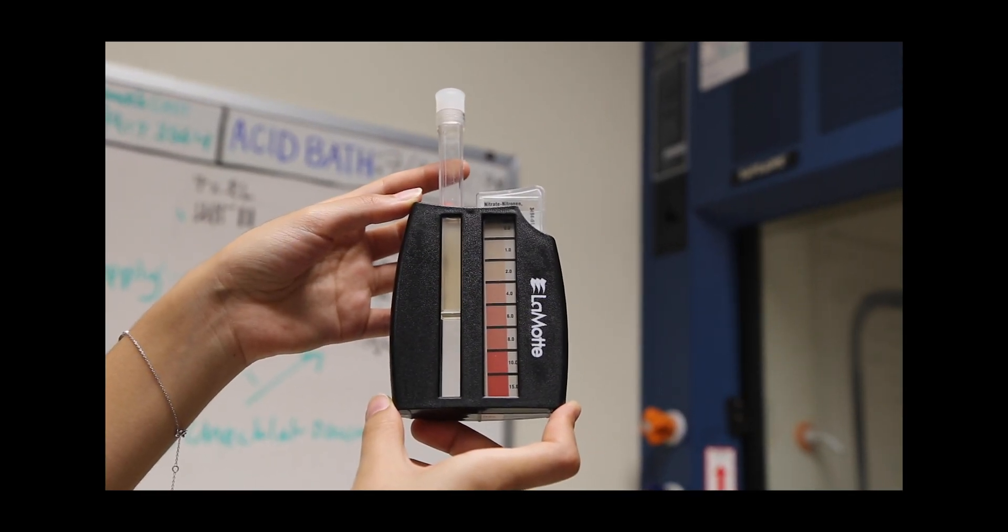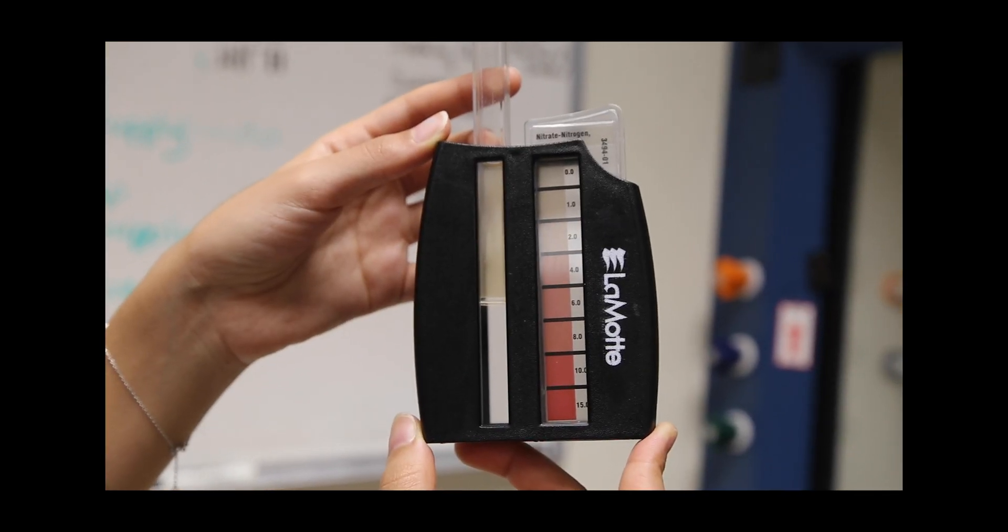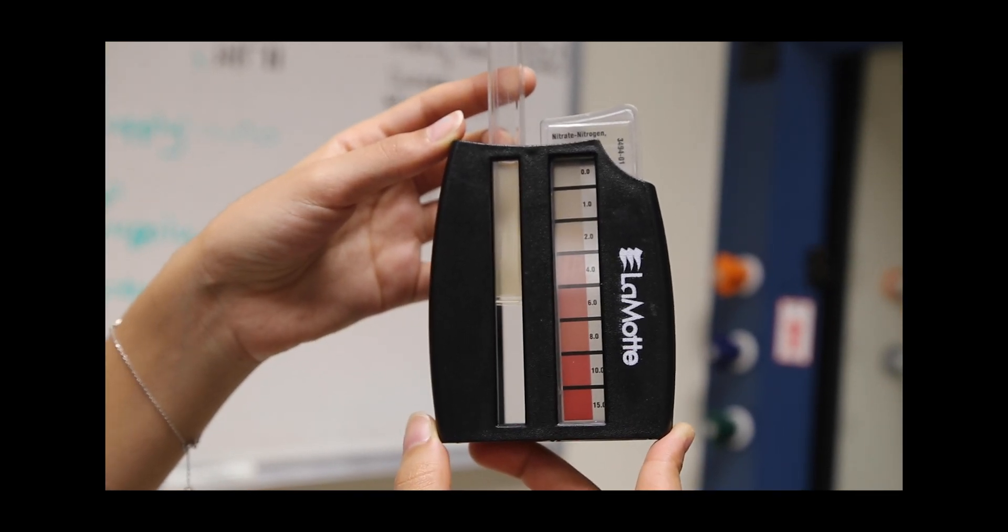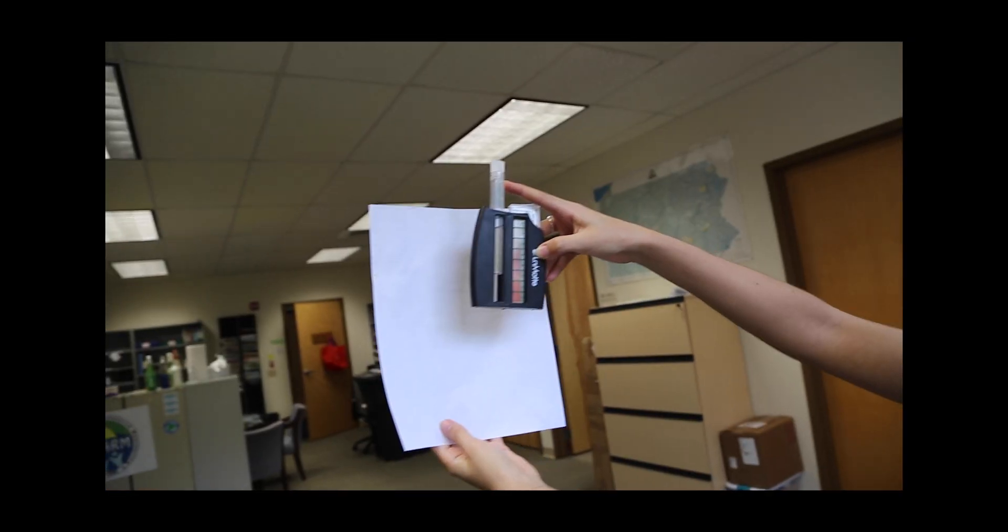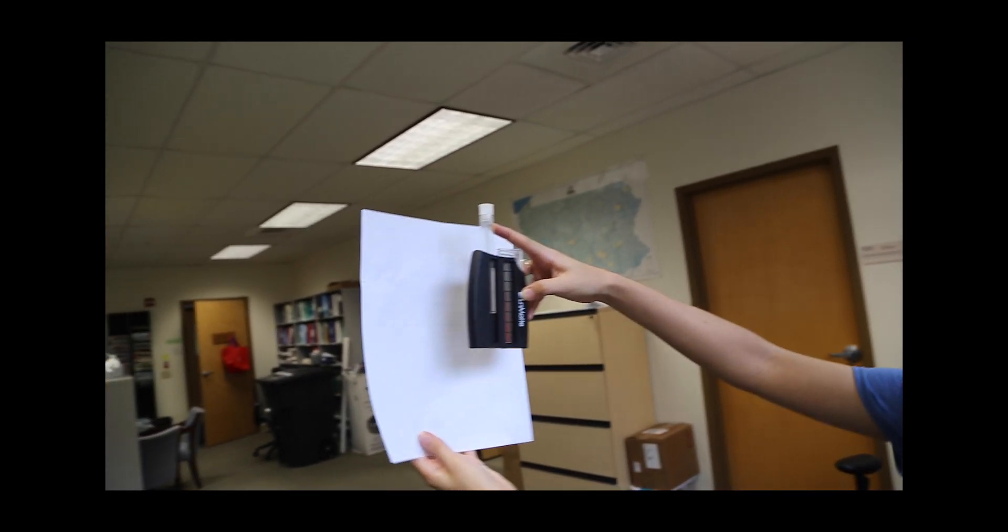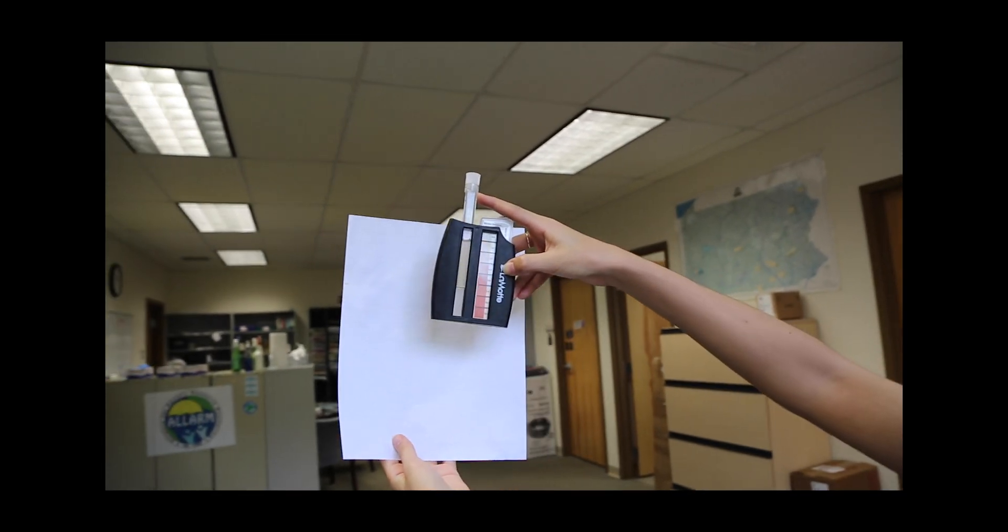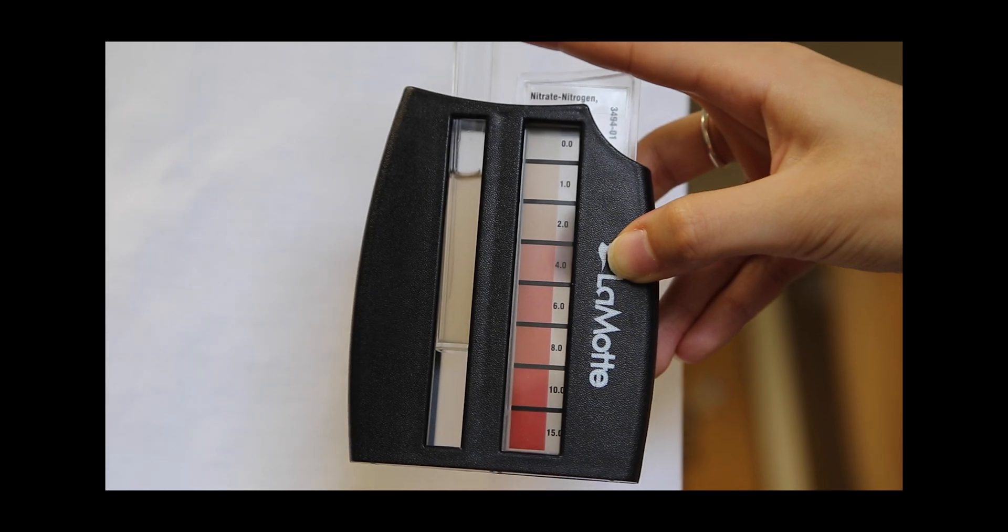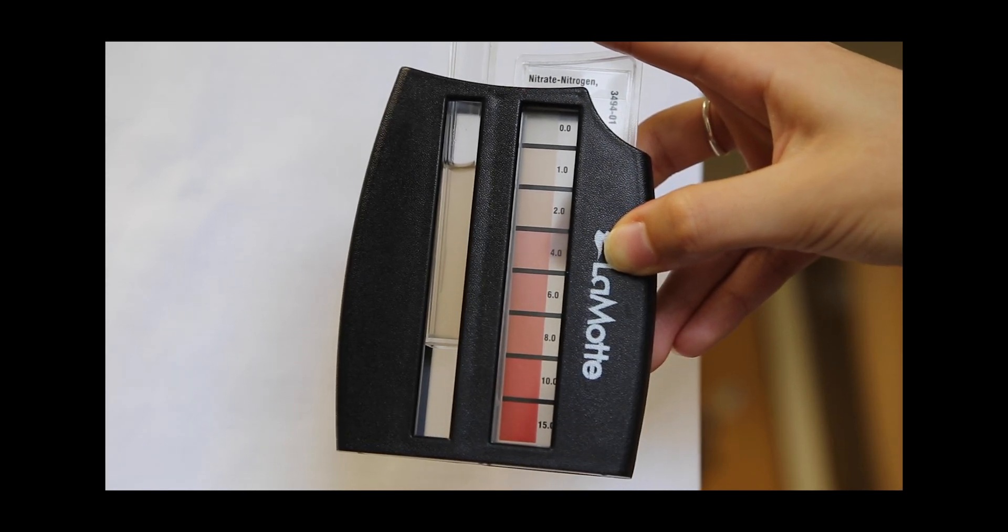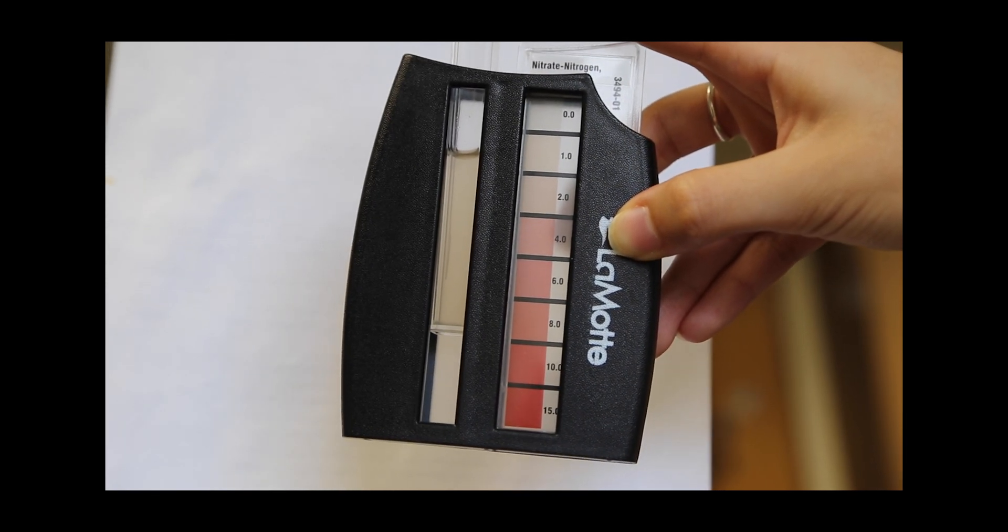Now that you have let your sample sit for 5 minutes, insert one test tube into the OctiSlide Color Range Viewer. Hold the viewer about 1 foot in front of a white colored background and have a good light source above and behind the back of the viewer. You can also hold a white sheet of paper about 1 foot from the OctiSlide viewer for another source of light.